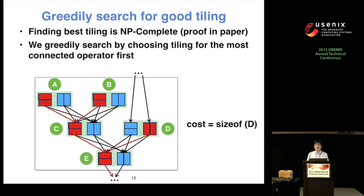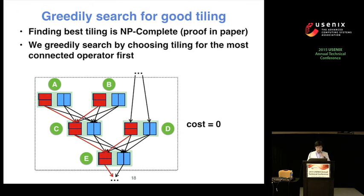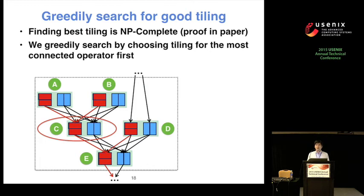For example, one choice selects all tilings as row-based with cost zero. Since exhaustive search is exponential, Spartan adopts a greedy approach to search for the best tiling. We observe that if an operator is used by more other operators, it tends to affect overall tiling cost more. So Spartan's greedy heuristic searches the tiling group with maximum edge connectivity first and chooses the tiling for that node. For example, in this subgraph, C has the maximum edge connectivity, so Spartan deals with it first.